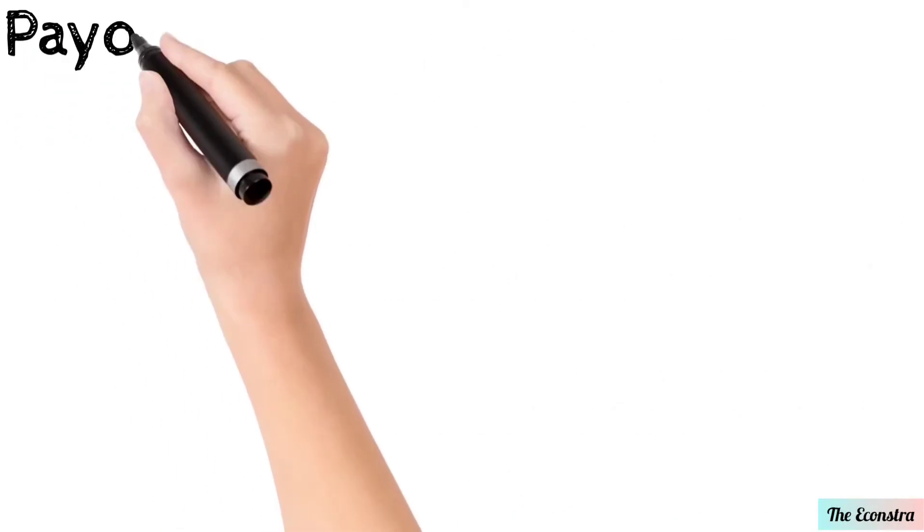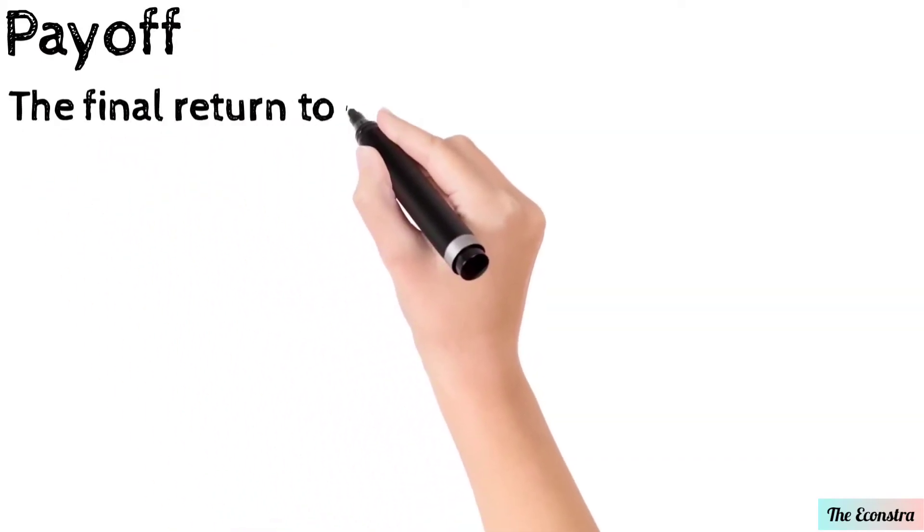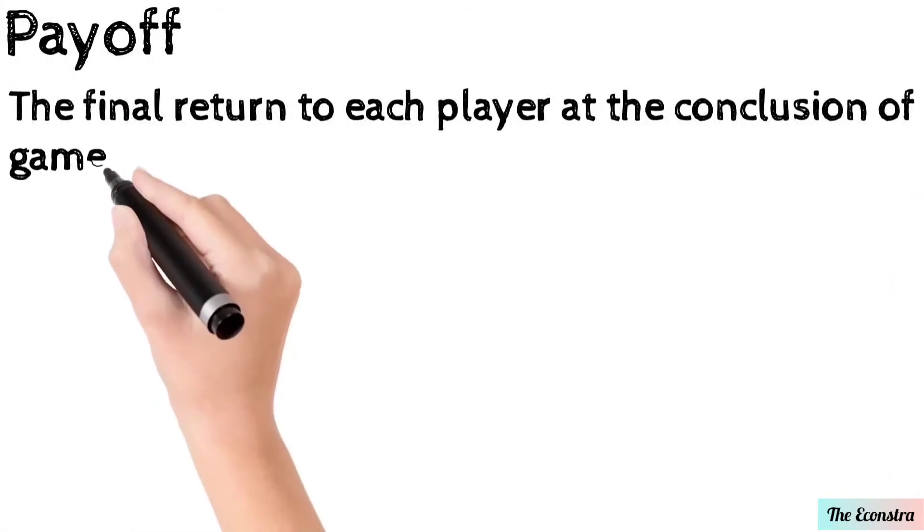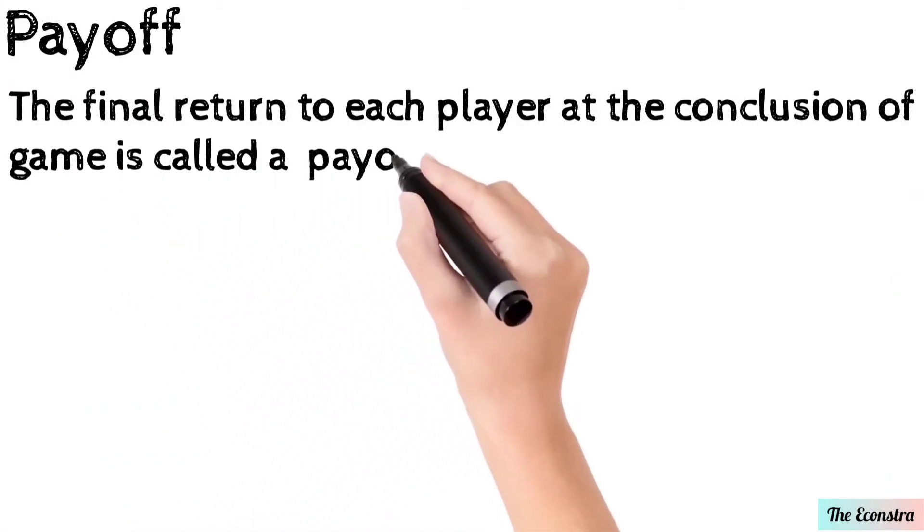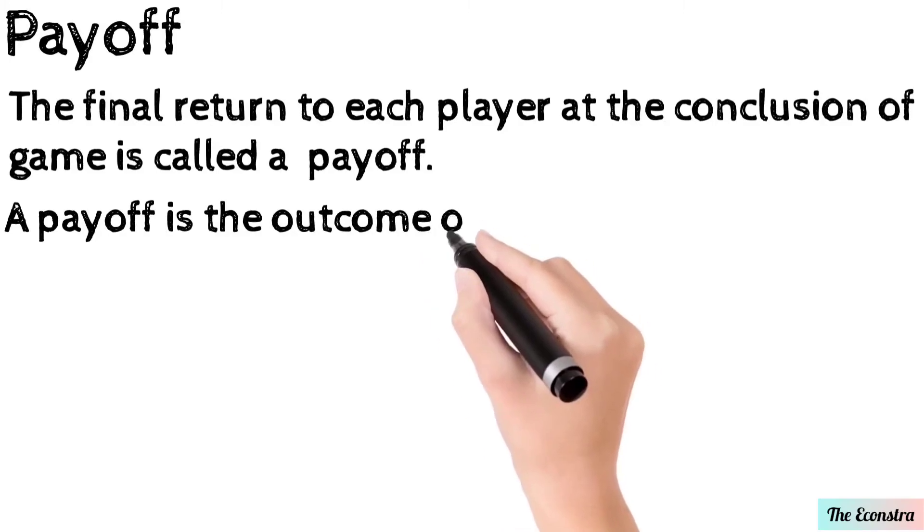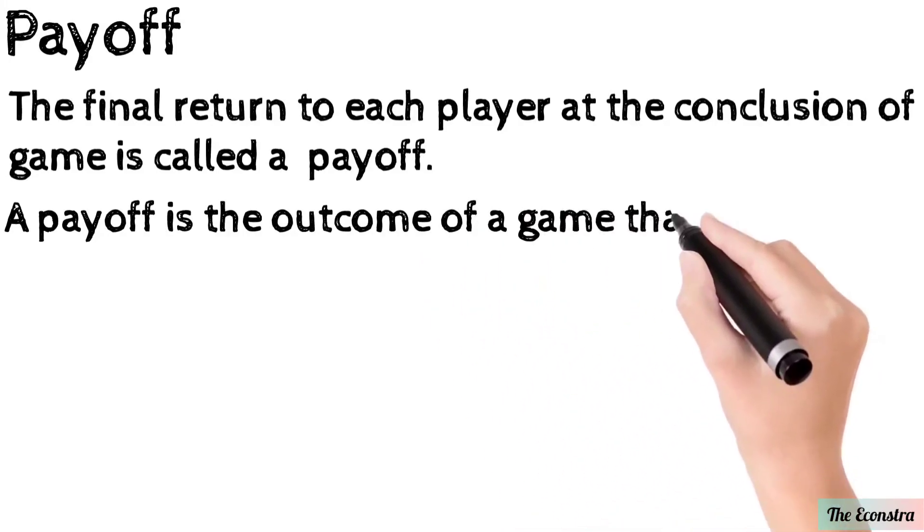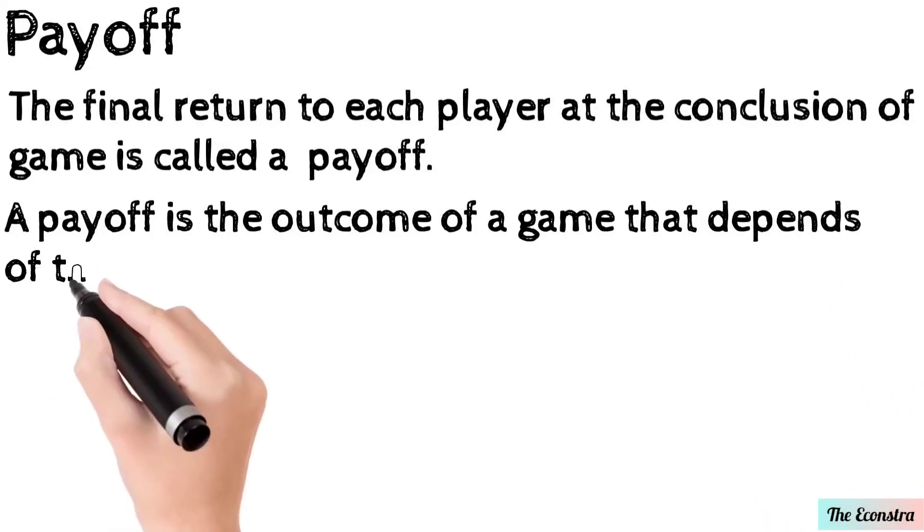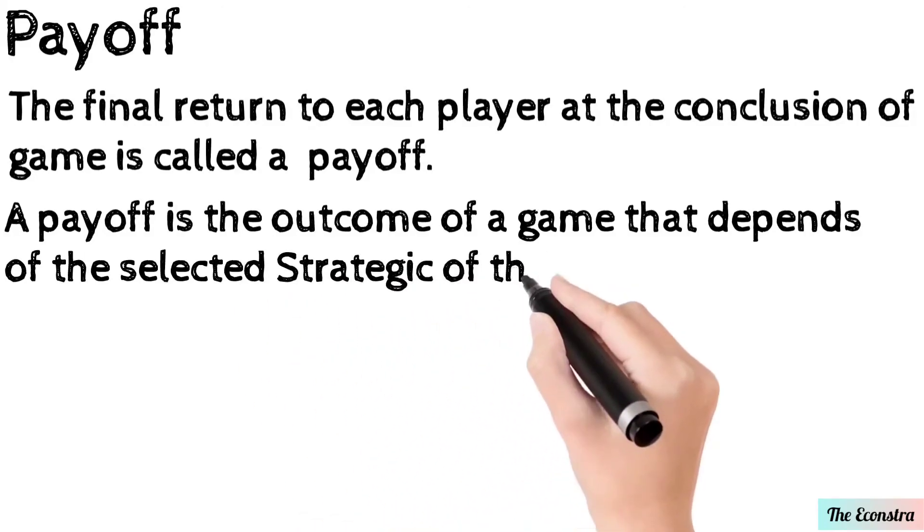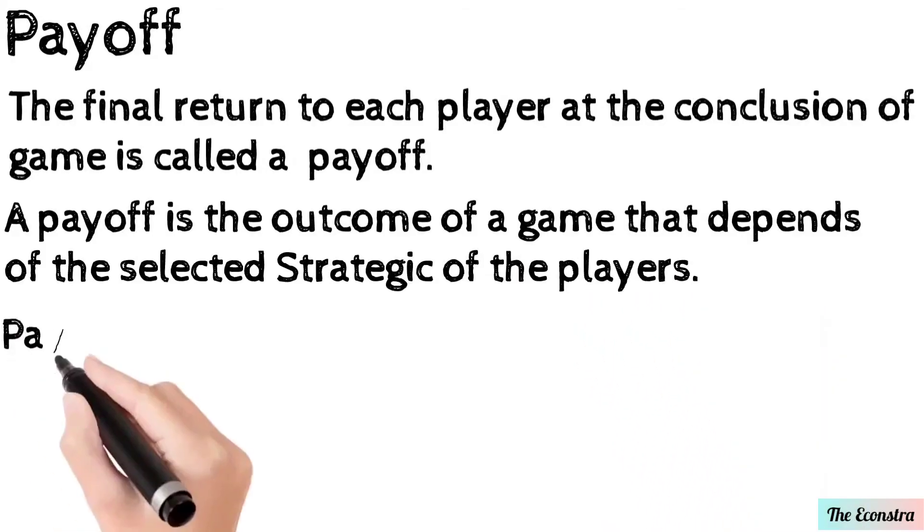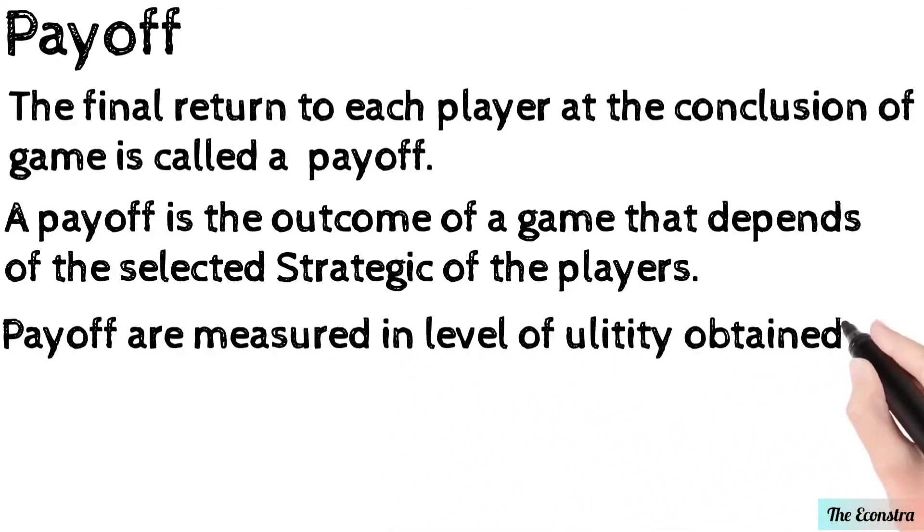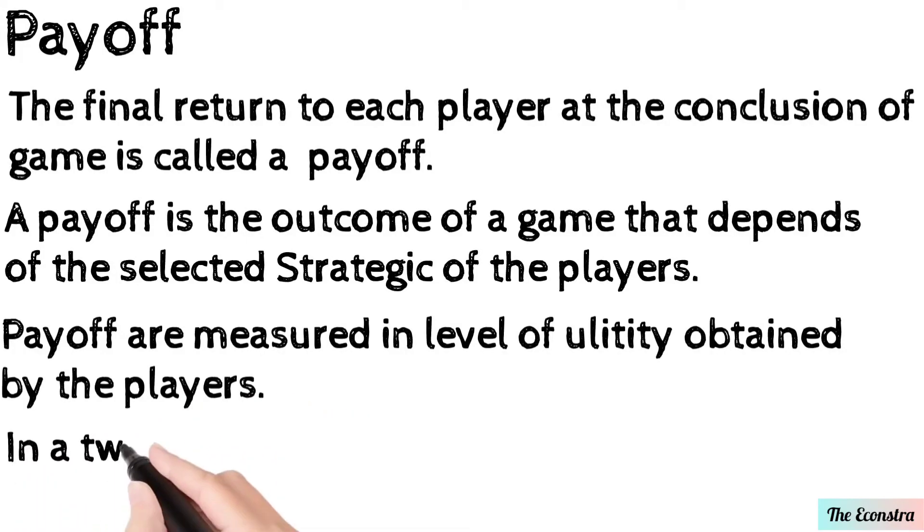Third is payoff. The final return to each player at the conclusion of the game is called a payoff. That means what the player is getting after the game or at the conclusion of a game is called payoff. A payoff is an outcome of a game that depends on the selected strategy of the players - which strategy will be chosen and then how the player will gain output.